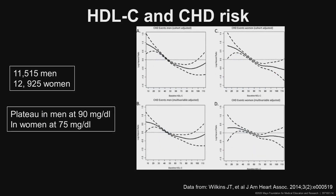In a study including individuals from several large prospective NHLBI cohorts with nearly 24,000 men and women, HDL cholesterol levels were associated in a U- or J-shaped manner with increased risk — increased risk at the lower levels of HDL, then plateauing, and potentially some increase in risk with higher levels of HDL cholesterol. The authors reported a plateau in men at 90 milligrams per dL for cardiovascular protection and in women at 75 milligrams per dL.